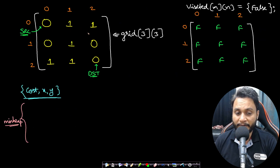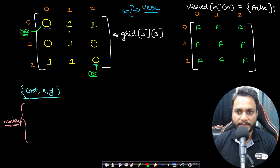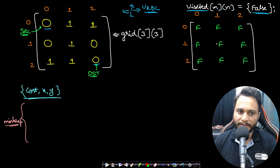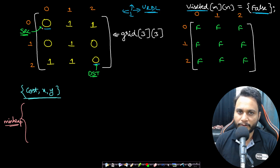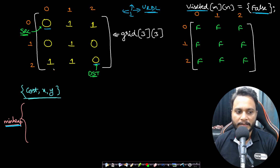Let's apply Dijkstra's algorithm on a 3 by 3 matrix to find the minimum cost path from source 0,0 to destination 2,2. I'll make four-directional calls in the order up, right, down, left. Whenever I process a node I don't want to reprocess it, so I take a visited array of the same size as the grid, initialized to false. Since I want to minimize cost, I'll use a min-heap, which always keeps the minimum cost item at the top. The heap stores both the cost and the x,y coordinate.